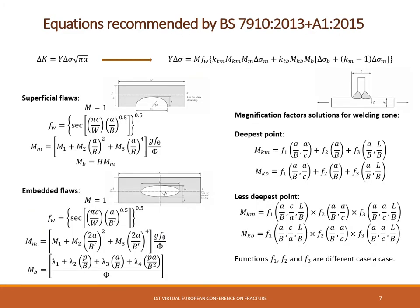The equations recommended by British Standard 7910 for magnification factor solutions — considering superficial flaws, embedded flaws, the deepest point in the welding zone, and the least deep point also in the welding zones — are presented in this slide.